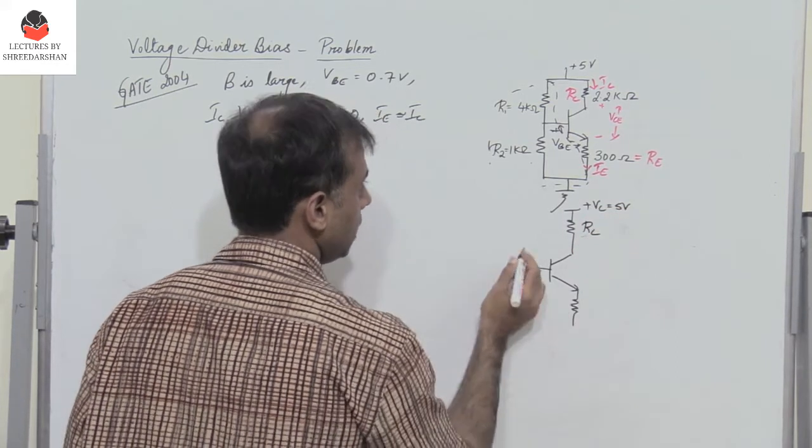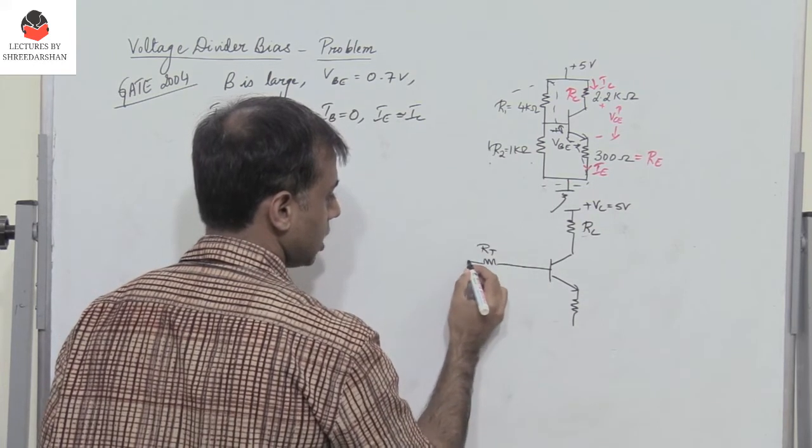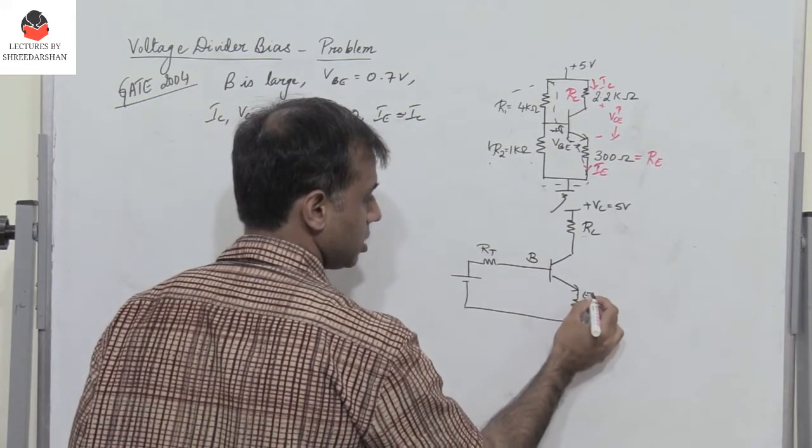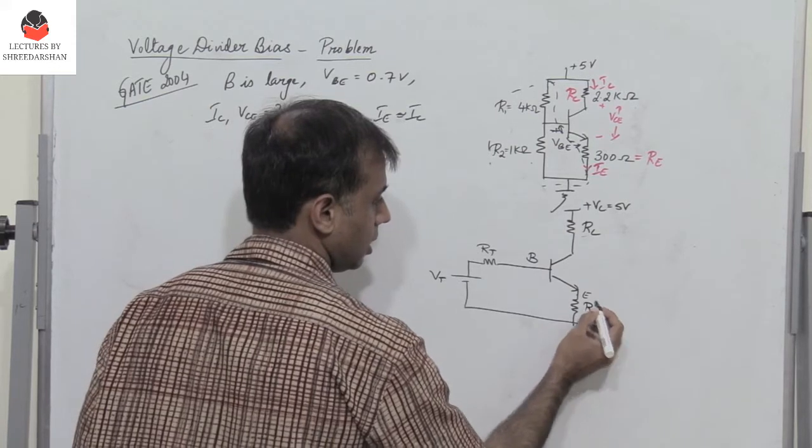You have Rc here. And then I have the Thevenin's resistance Rt and Vt which is connected across the base and emitter of the transistor. So this is Vt and this is Re.